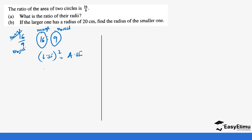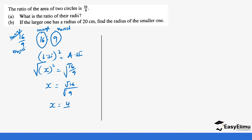In this case we do not have the linear scale factor, but we do have the area scale factor which is 16 over 9. So to get the linear scale factor we do the square root of both sides, which gives the square root of 16 over the square root of 9. So x equals 4 over 3. The ratio for the linear scale factor is going to be 4 is to 3, where 4 represents the image and 3 represents the object.